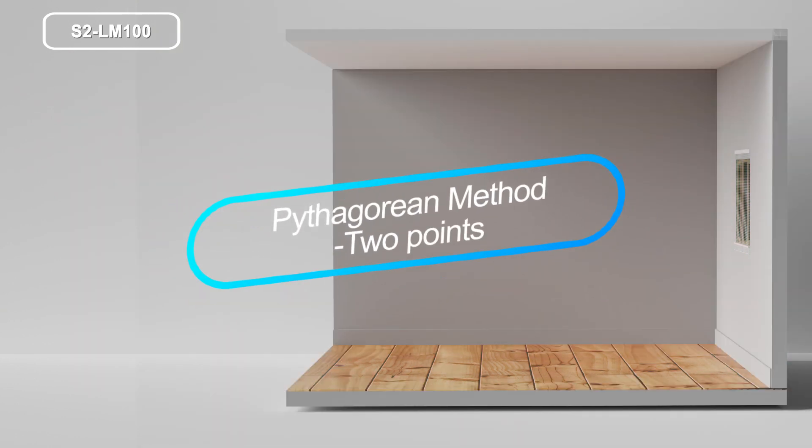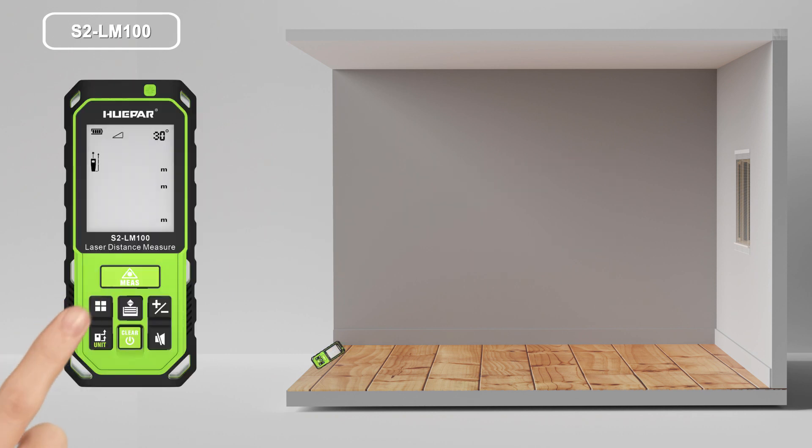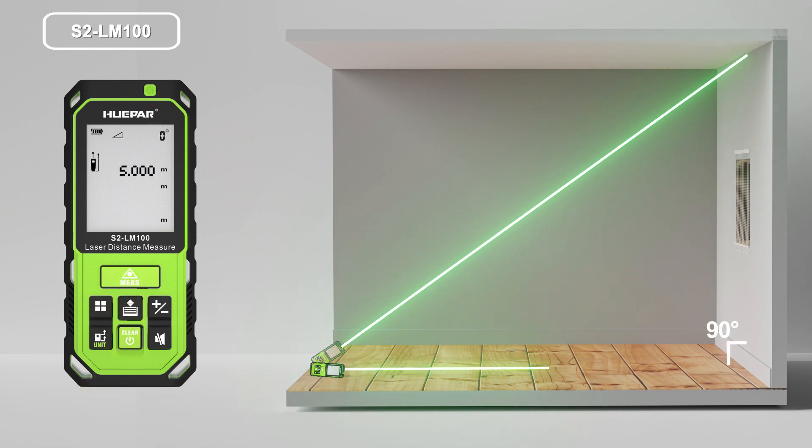Pythagorean method two points. Press the bottom three times to activate the function. The symbol appears in the functions field on the display. Take measurements with the two points shown on figure in numeric sequence. The heights of the object will be calculated automatically and displayed on screen.